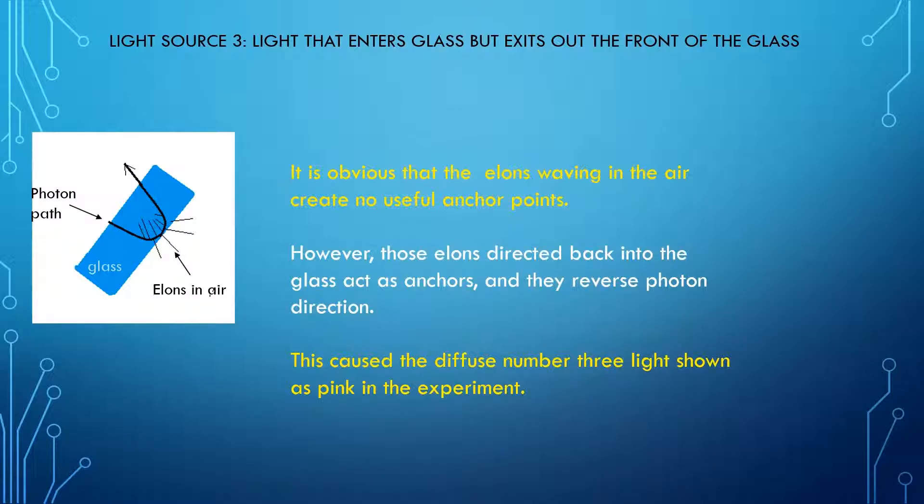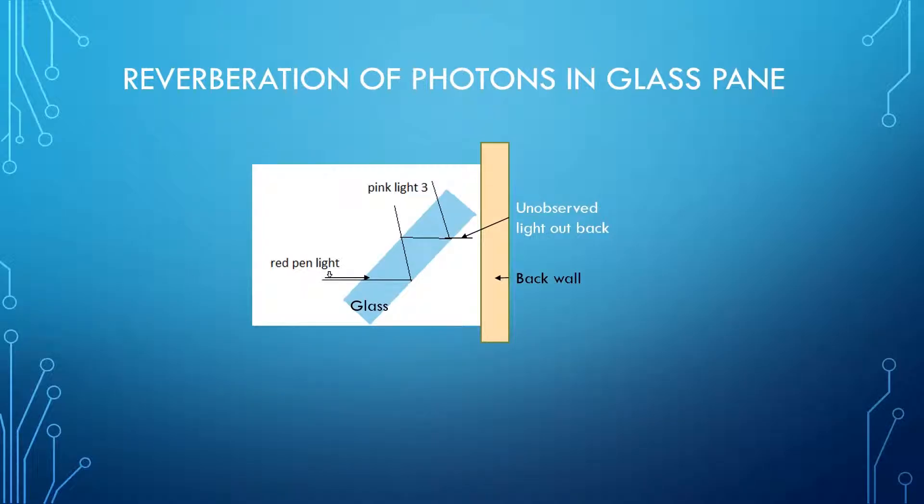Just why the light might be spread over a large area is shown in the next slide. Here I have shown that some of the original pen light is pulled back into the glass. From this point, the photons will continue to reverberate inside the glass pane until their string cycles favor their exit from the glass. This causes the creation of light three in the experiment that is spread over a large area.